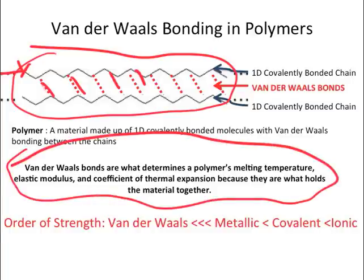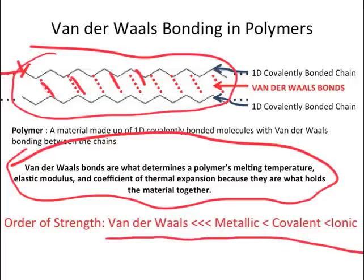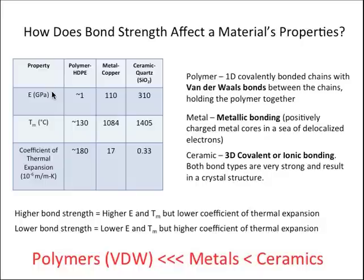In comparison to other bond types, van der Waals bonds are much less strong than metallic bonds, which are less strong than covalent bonds, which are less strong than ionic bonds, as shown in this flowchart. As engineers, we generally care about how a material behaves on the large scale. Bonding directly affects a material's melting point, coefficient of thermal expansion, and elastic modulus.